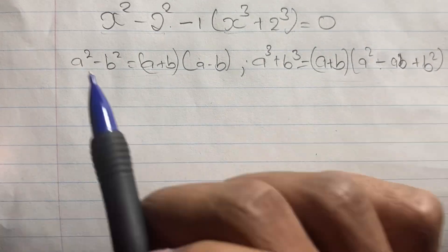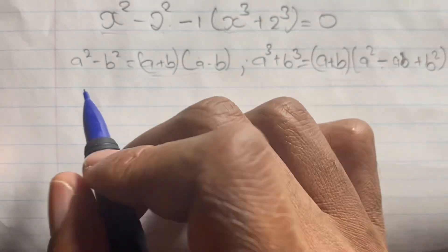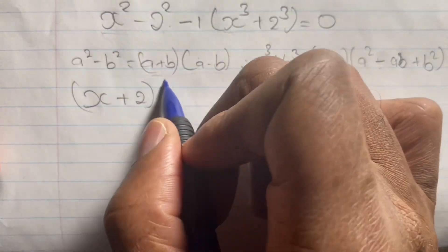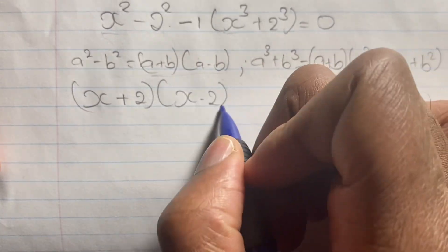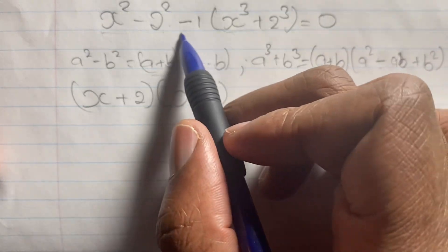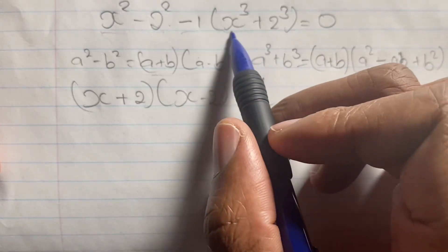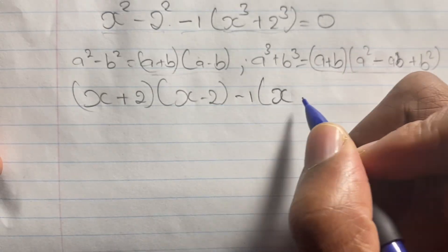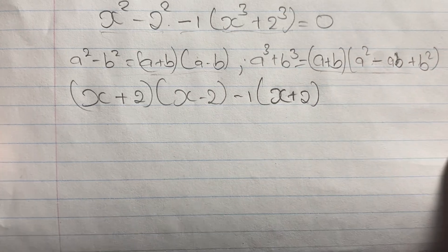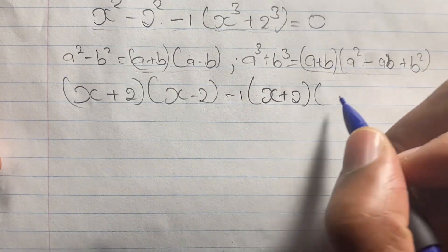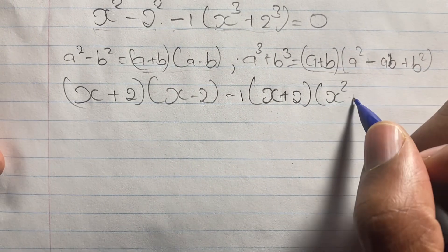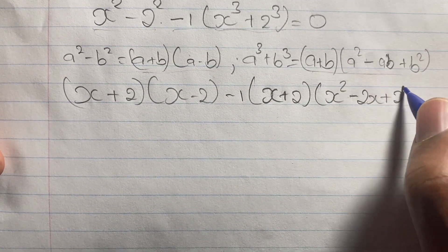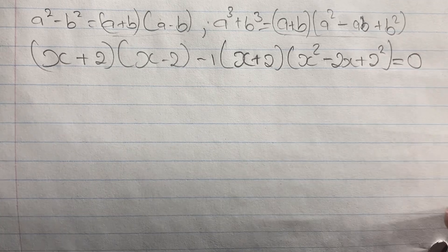Applying these rules to our equation: for the difference of two squares we get (x plus 2)(x minus 2). Then minus 1 times, for the sum of two cubes we get (x plus 2)(x squared minus 2x plus 2 squared). This equation is still equal to 0.